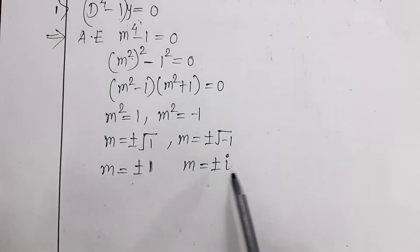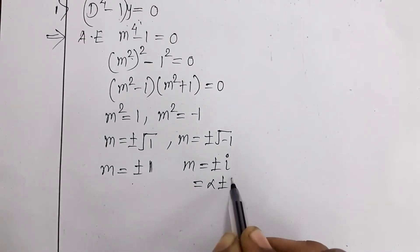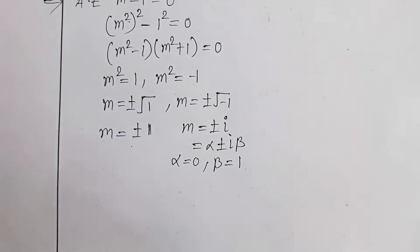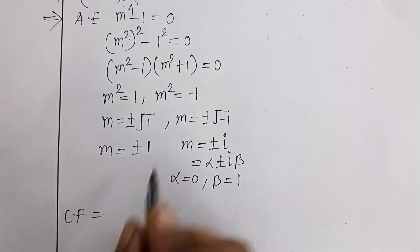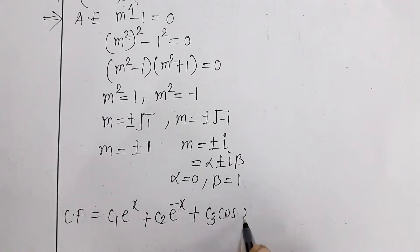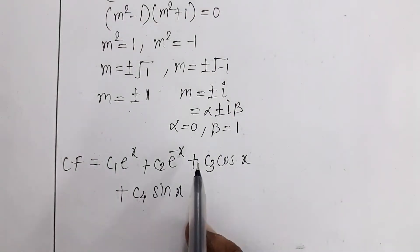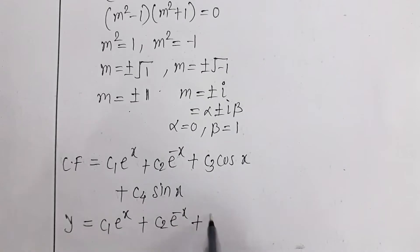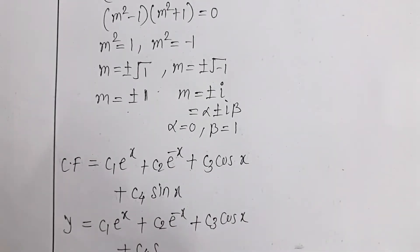The first two roots (+1 and -1) are real and different. The next two (±i) are imaginary roots of the form α ± iβ, where α = 0 and β = 1. So the complementary function (CF) is: CF = C₁eˣ + C₂e⁻ˣ + e^(0x)(C₃cos x + C₄sin x) = C₁eˣ + C₂e⁻ˣ + C₃cos x + C₄sin x, which is the solution of the given differential equation.